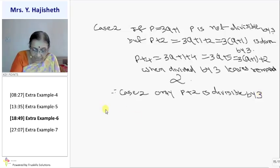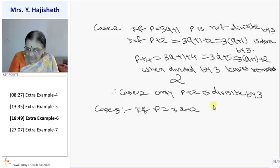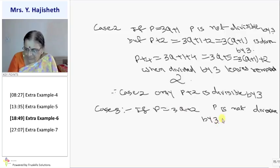Now case 3. If p is 3q plus 2, then p is not divisible by 3. Because when it is divided by 3, it leaves remainder 2.